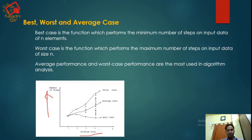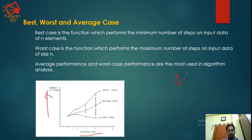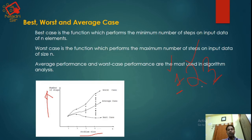If our problem size is one, then best case, average case, and worst case are all in the same position. But when the problem size increases — say two elements — the best and worst case differ, with no average case. If the problem size is three, then there is a best case, a worst case, and the middle position becomes the average case. So when the number of elements is more than two, the concept of average case applies.